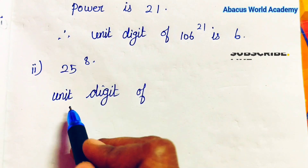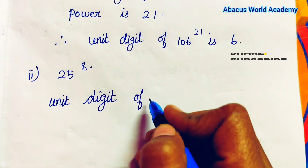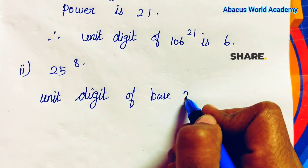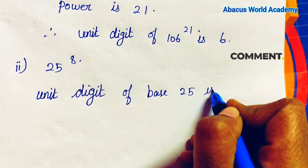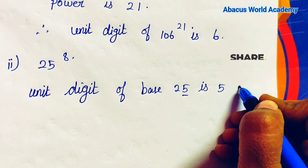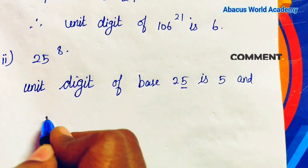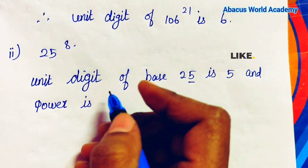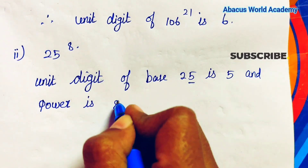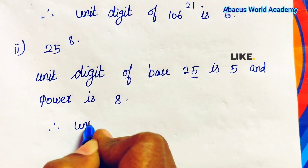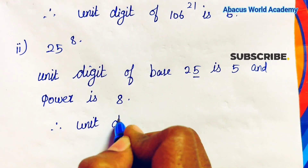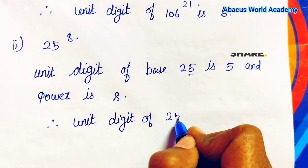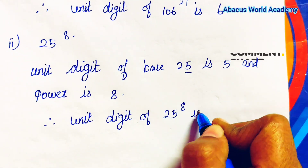Second one: 25 to the power 8. Unit digit of base 25 is 5, and power is 8. Therefore, unit digit of 25 to the power 8 is 5.